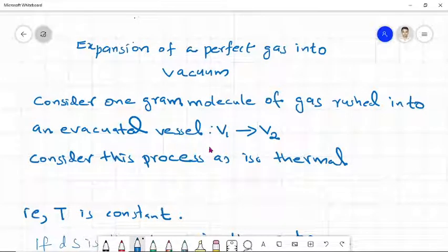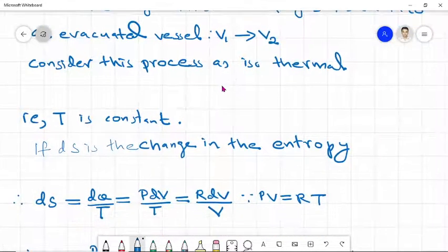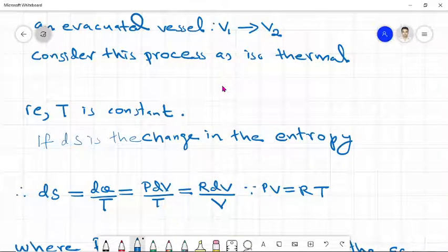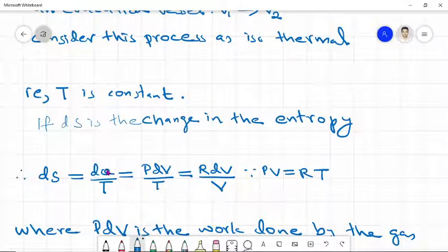Also consider this process as an isothermal process. That means the temperature is constant during the process. If ds is the change in the entropy, therefore ds is equal to dq by T. We already know that dq is equal to dU plus dW, where dW is PdV.